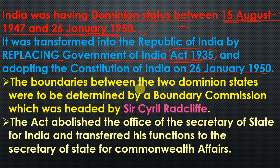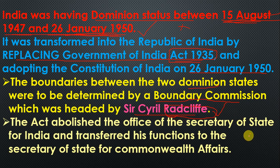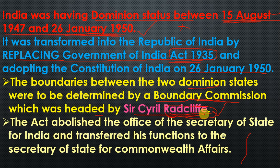Two dominions would be created and a boundary commission would determine the boundary between them. The head of the boundary commission was Radcliffe, and the boundary line drawn between India and Pakistan is therefore called the Radcliffe Line.